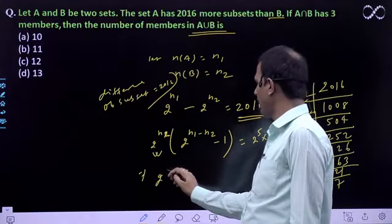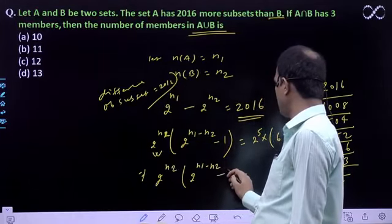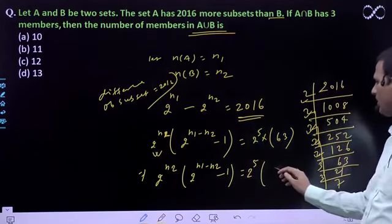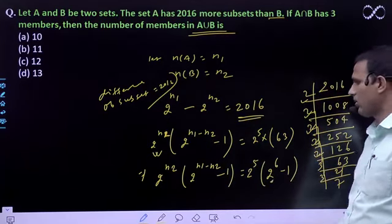Equating both sides: 2 to the power n2 times (2 to the power (n1 minus n2) minus 1) equals 2 to the power 5 times 63. Notice that 63 can be written as 2 to the power 6 minus 1, which is 64 minus 1.